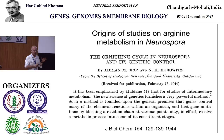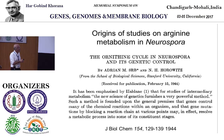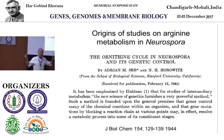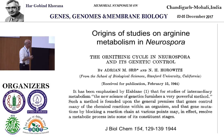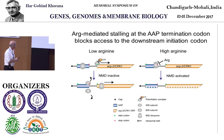Those of us of a certain age remember attenuation. This is in a sense like attenuation, but at the level of RNA stability instead of allowing transcription elongation to continue. Historically, 1944 - three years after Beadle and Tatum's 1941 paper - the ARG2 gene was discovered. The abstract states that for studies of intermediary metabolism, the new science of genetics furnishes a very powerful method. Now of course we think of systems biology, proteomics, and genomics as very powerful methods.